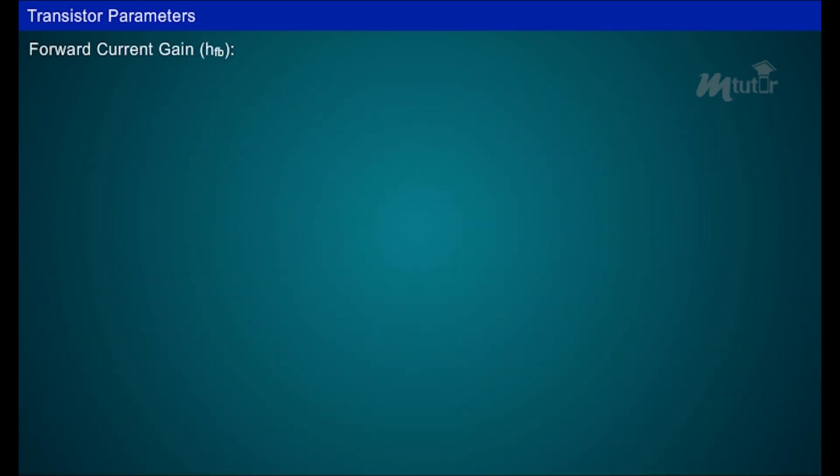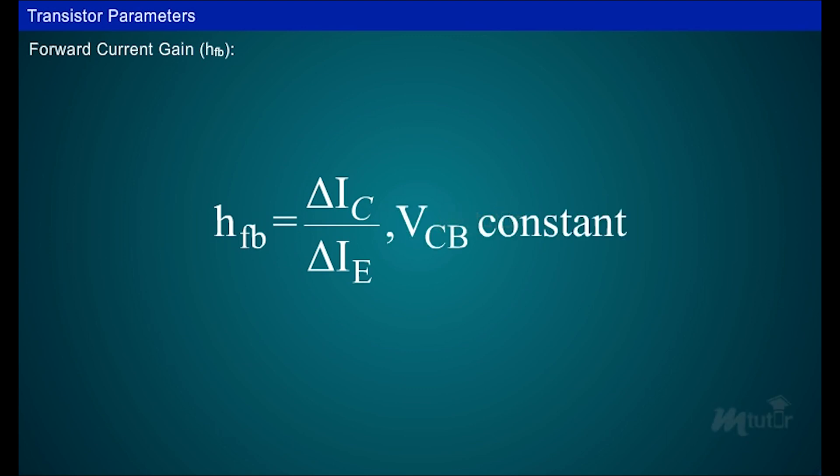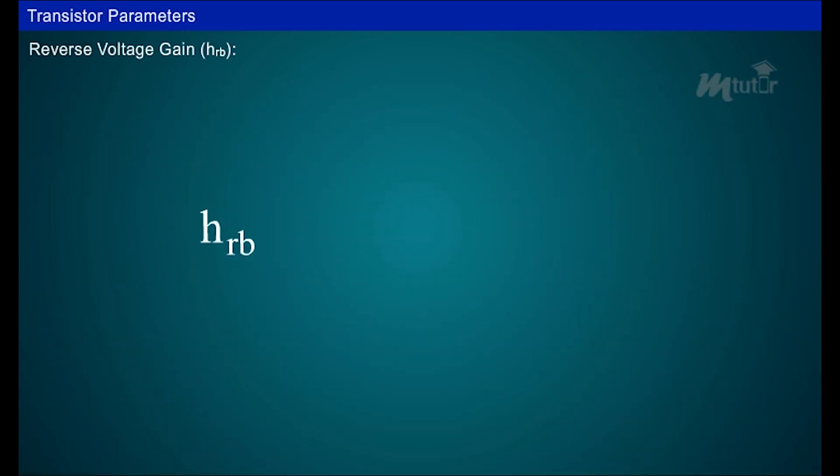Forward current gain, HFB, is the ratio of change in the collector current to the corresponding change in the emitter current, keeping the collector voltage, VCB, constant. Its typical value varies from 0.9 to 1.0.